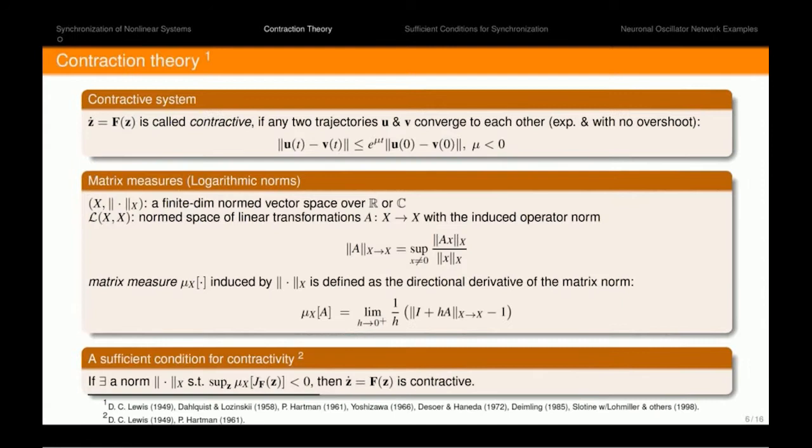Hello, thanks for coming to our talk. I also would like to thank the organizers for organizing such a nice conference. So I would like to talk about contraction theory, which the methods are very old and are traced back to the work of Lewis in 1949, Dahlquist and Lozinskii in 1958, and recently Slotine and their group brought this into the field of control theory. So we say that a system z dot equals F of z is contractive if any two trajectories converge to each other exponentially and with no overshoot.